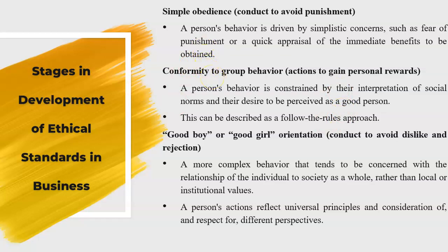The third important stage is good boy or good girl orientation — conduct to avoid dislike and rejection. This involves a more complex behavior concerned with the relationship of the individual to society as a whole, rather than local or institutional values. A person's actions reflect universal principles and consideration of and respect for different perspectives.